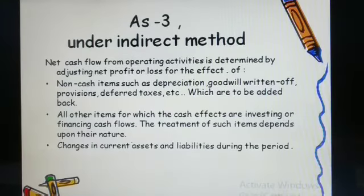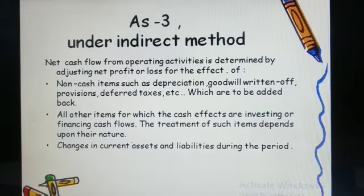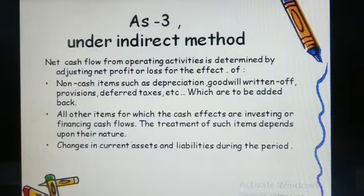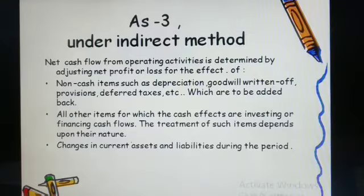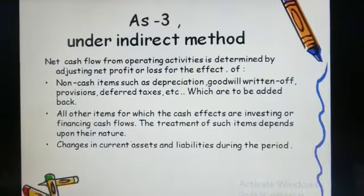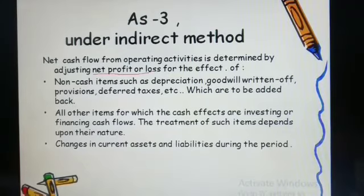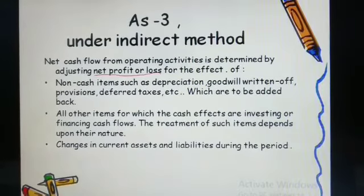Cash flow statement is governed by Accounting Standard 3 (AS3). Under indirect method, AS3 says that net cash flow from operating activities is determined by making adjustments to net profit or loss. Here we do not take gross profit and loss — what we take is the net profit and loss. Keep this in mind very clearly.